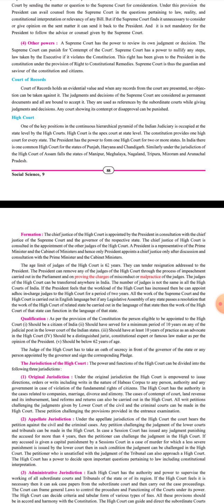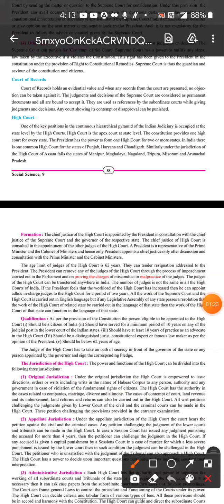The High Court is the state's apex court — the highest court at the state level. The Constitution provides one High Court for every state. The President has the power to form one common High Court for two or more states. So if there are two small states, one common High Court for them is valid.